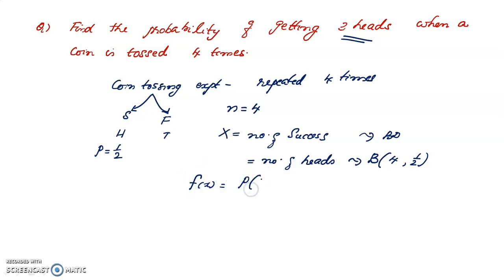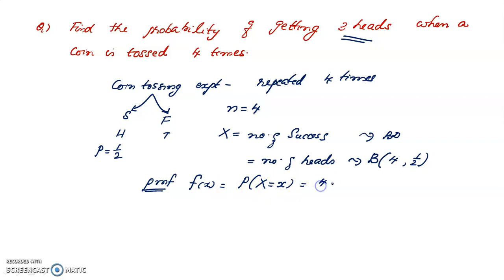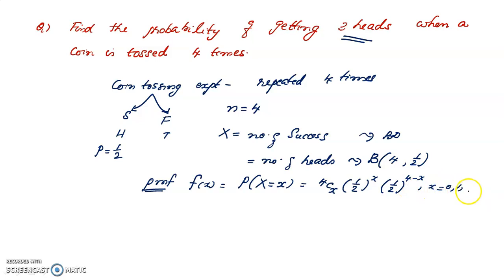Capital X takes the value of the number of heads. The probability mass function (PMF) of the binomial distribution is: P(X = x) = nCx · p^x · q^(n−x). Here n = 4, p = 1/2, and q = 1 − 1/2 = 1/2. So the PMF is 4Cx · (1/2)^x · (1/2)^(4−x).